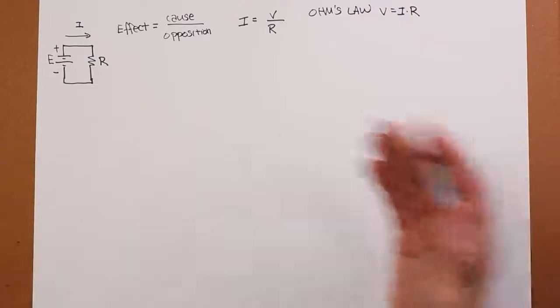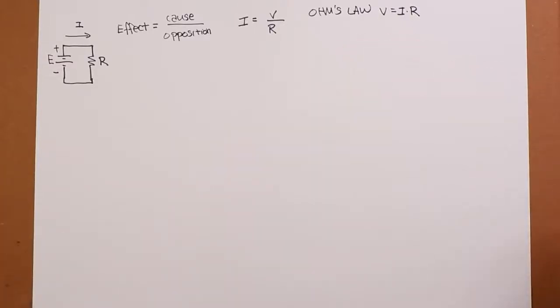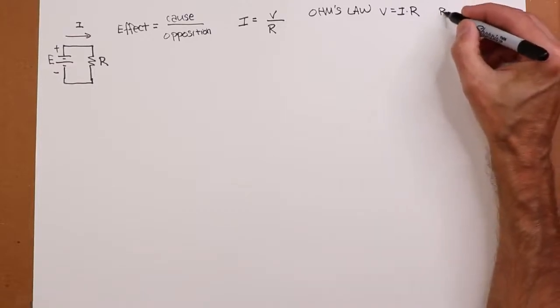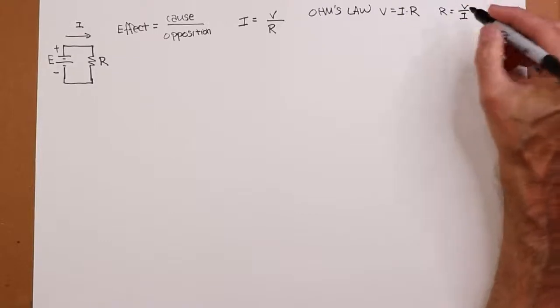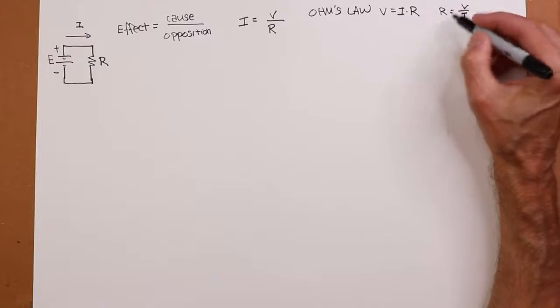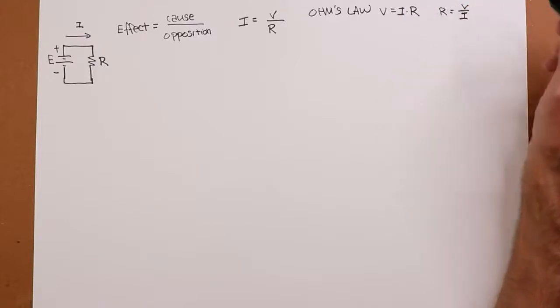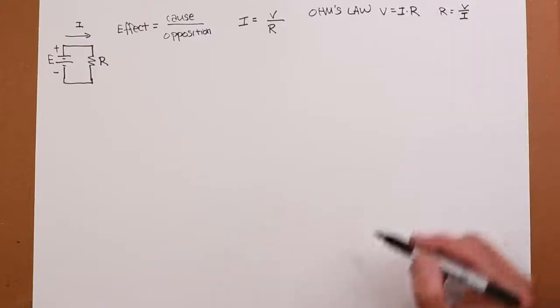Either way, right? Or you could write it in terms of R. R would have to equal V divided by I. You would use this form if you had a voltage and you wanted to get a certain current, and now you want to calculate a value of resistance to get you that current.